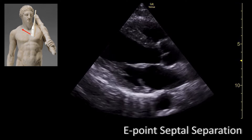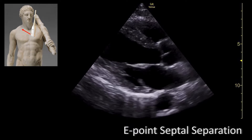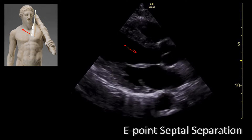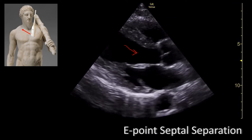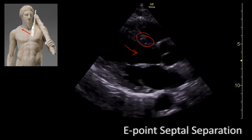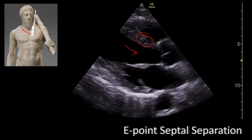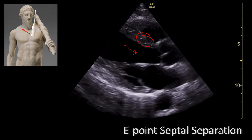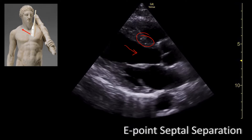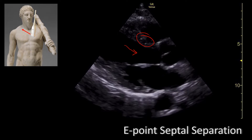The E-point septal separation measures how well the anterior leaflet of the mitral valve moves towards the septum. The closer it moves to the septum, the better the ejection fraction. An easy way to think about it is that if the anterior leaflet doesn't slap the septum, the ejection fraction is poor.